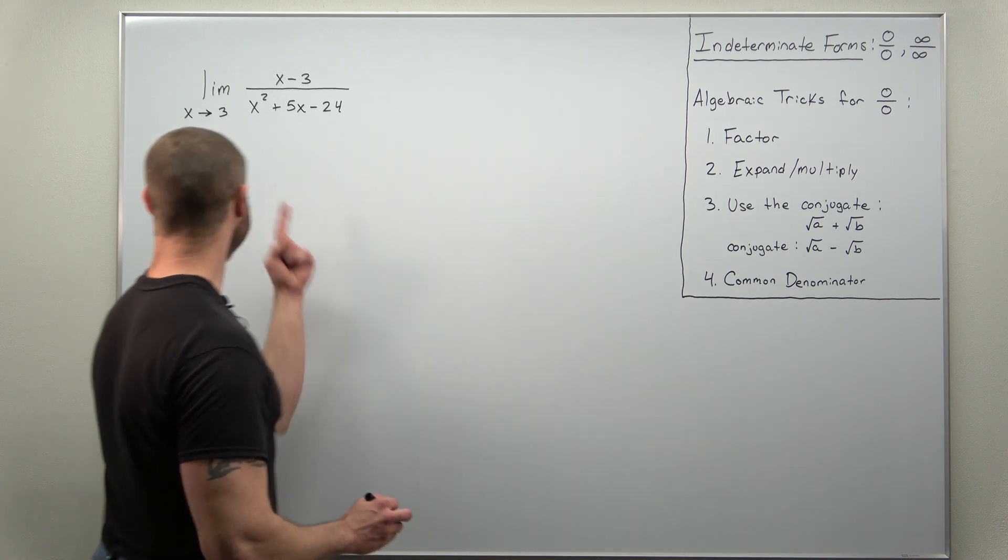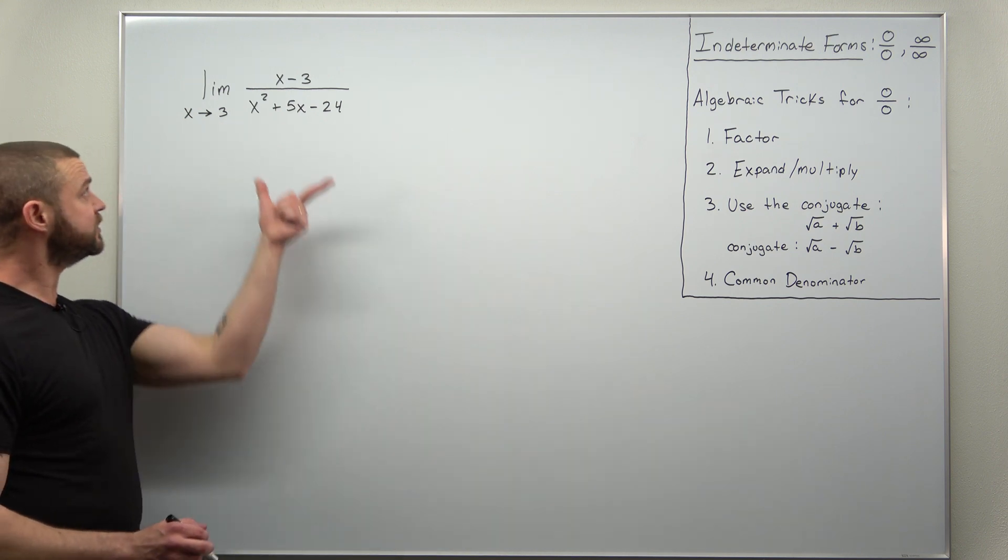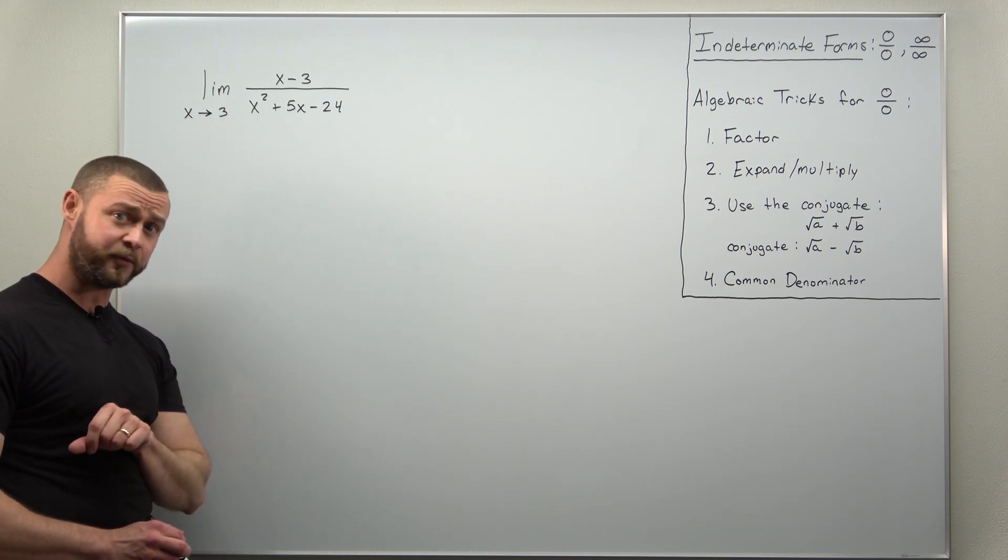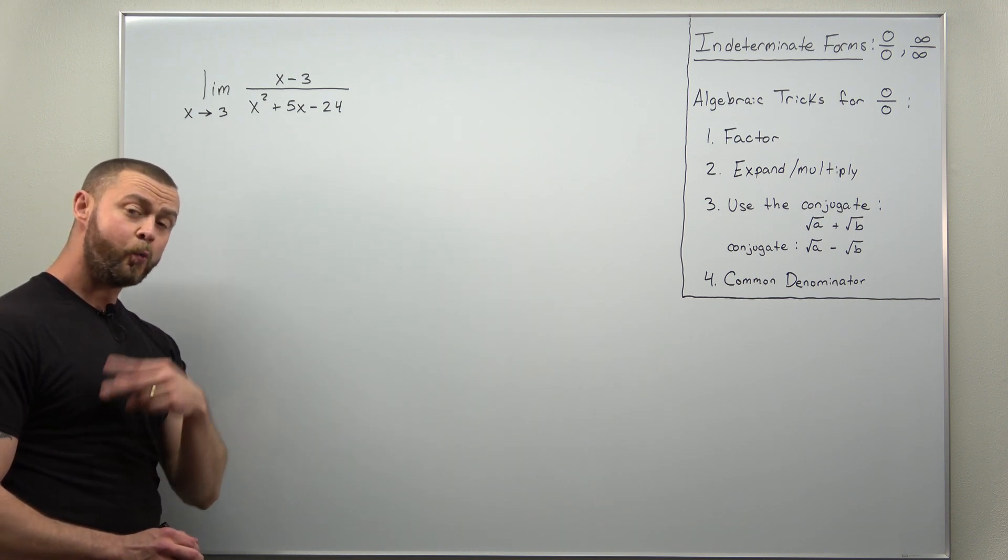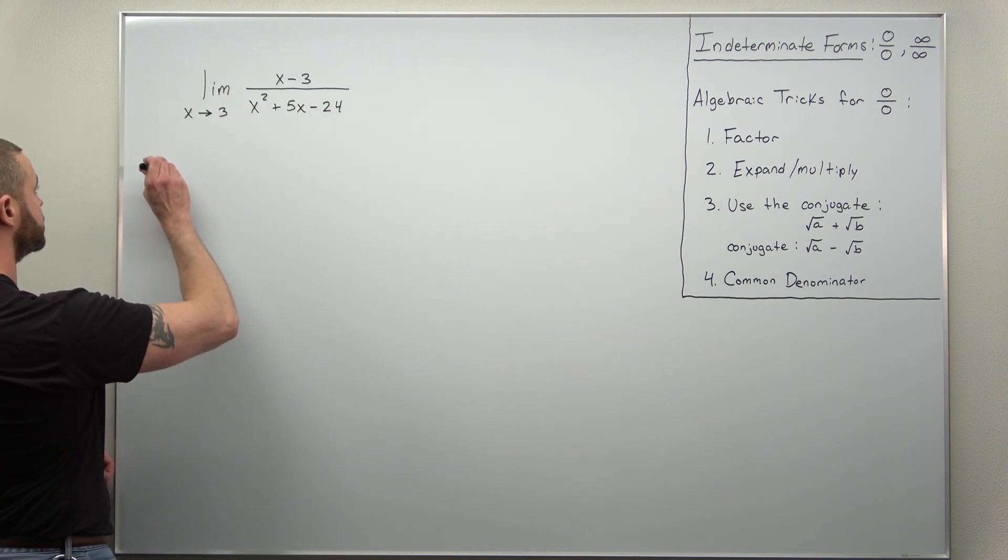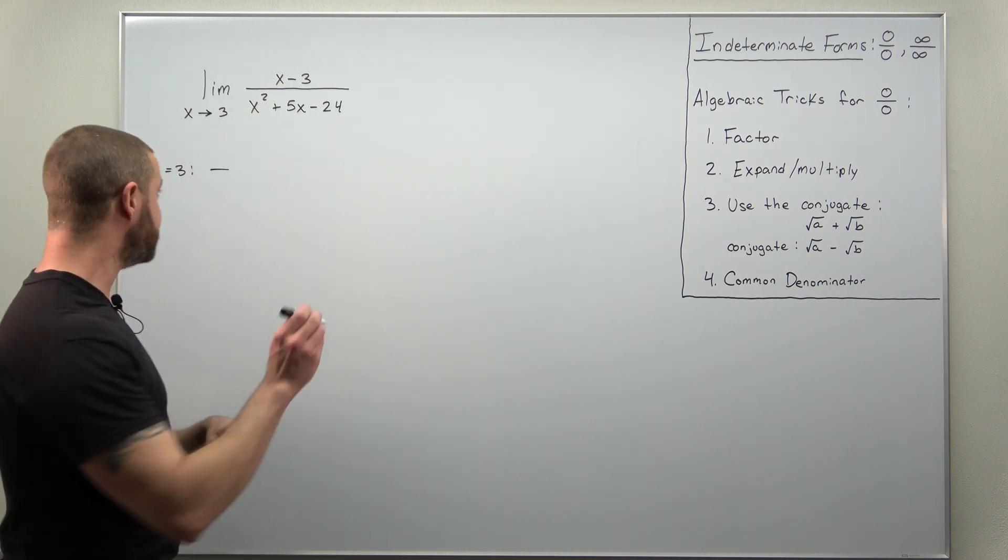All right let's go ahead to our first question here. We're letting x approach three for this function x minus three over x squared plus five x minus twenty-four. Now we want to check first what happens if we just plug in x equal to three to this.